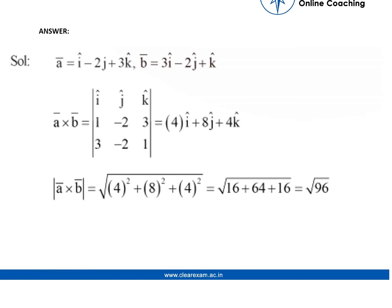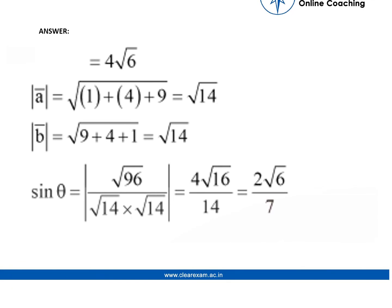The cross product of these would be this, and the scalar value of this cross product is 96. That is equal to 4 root 6.